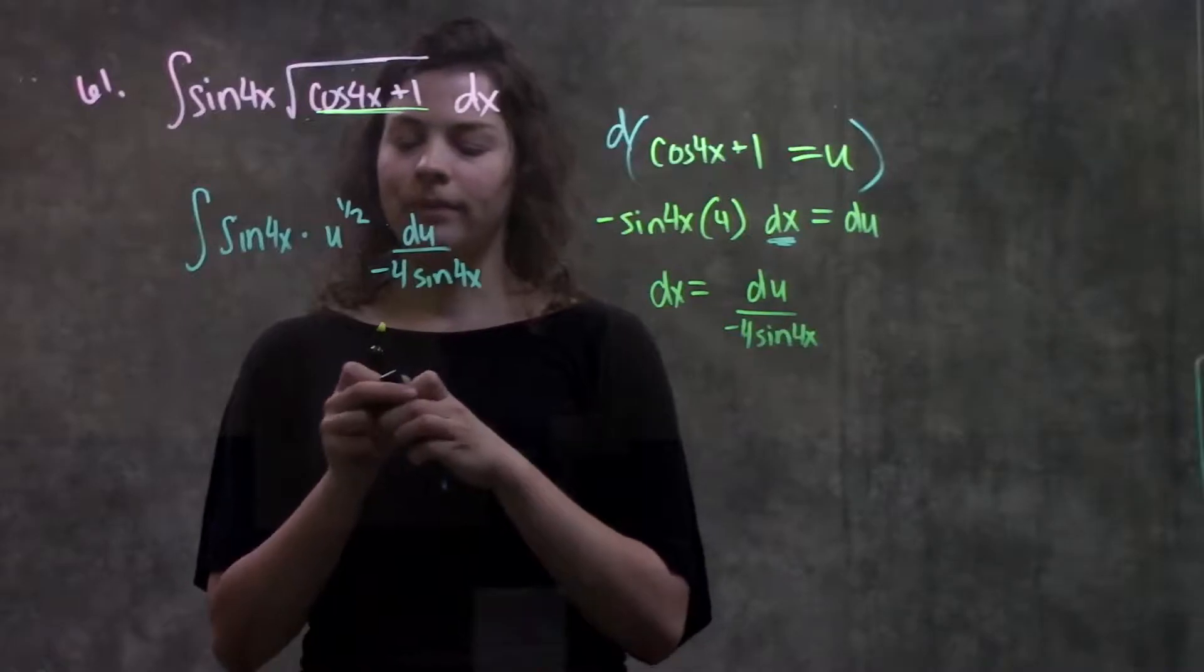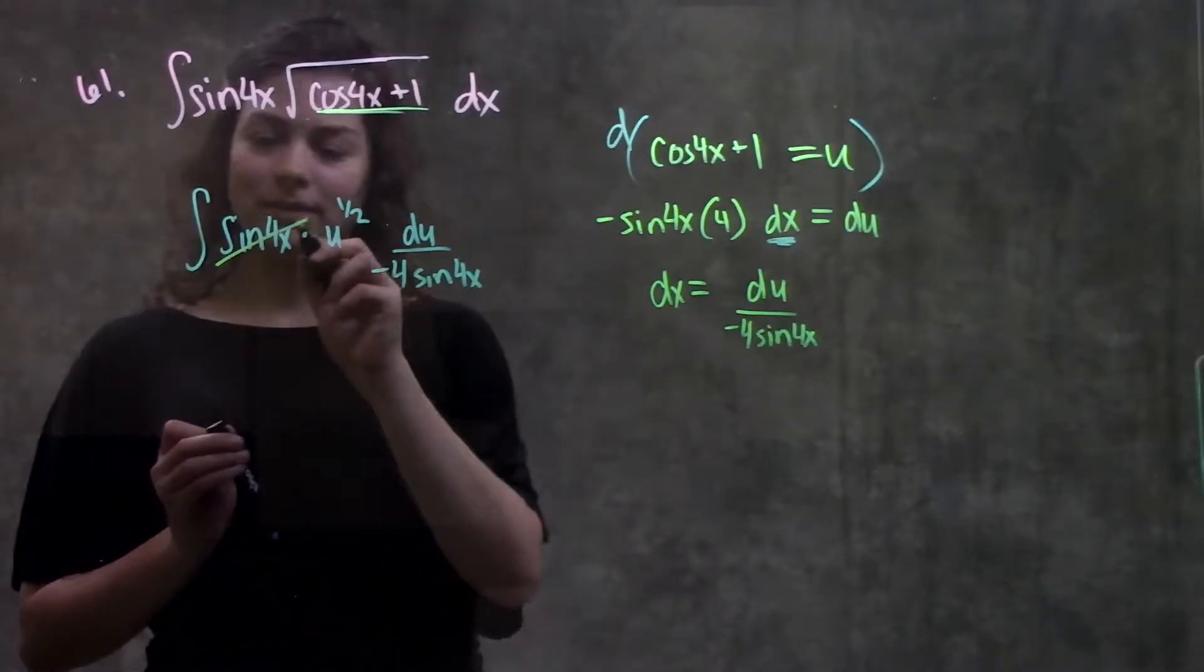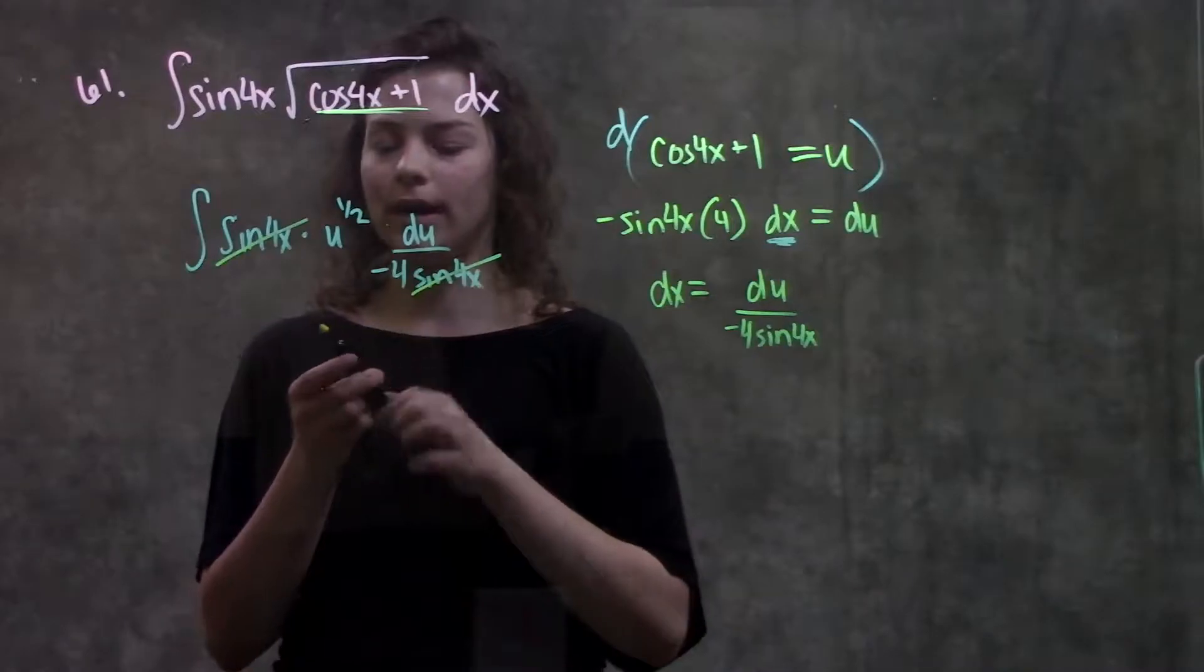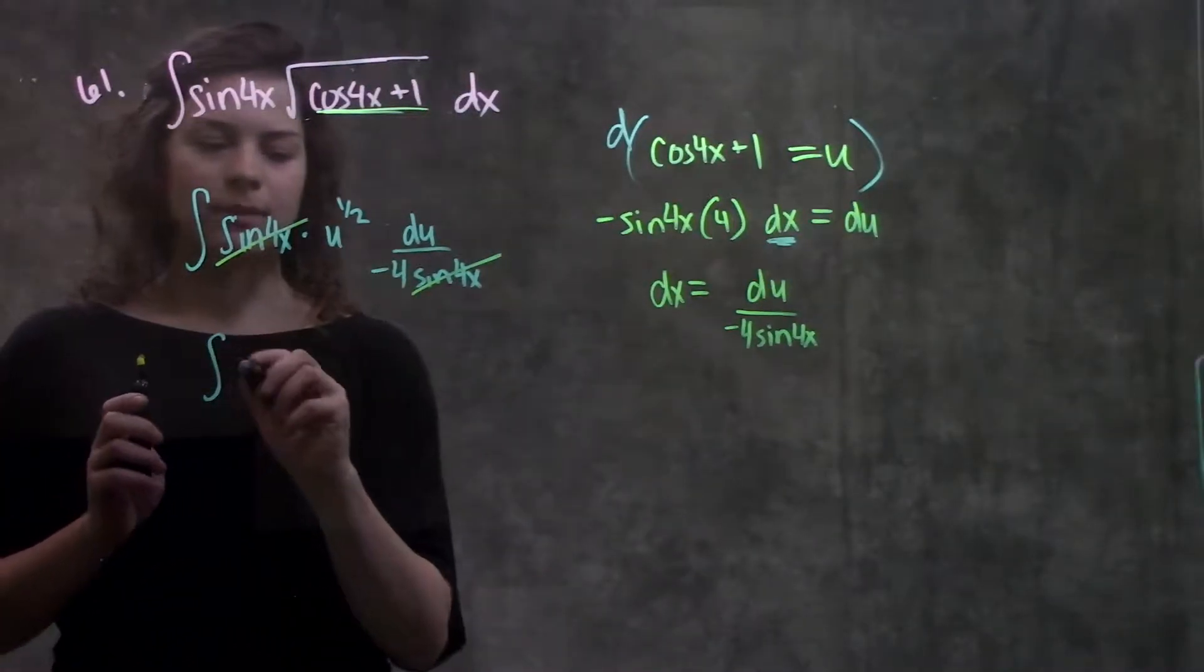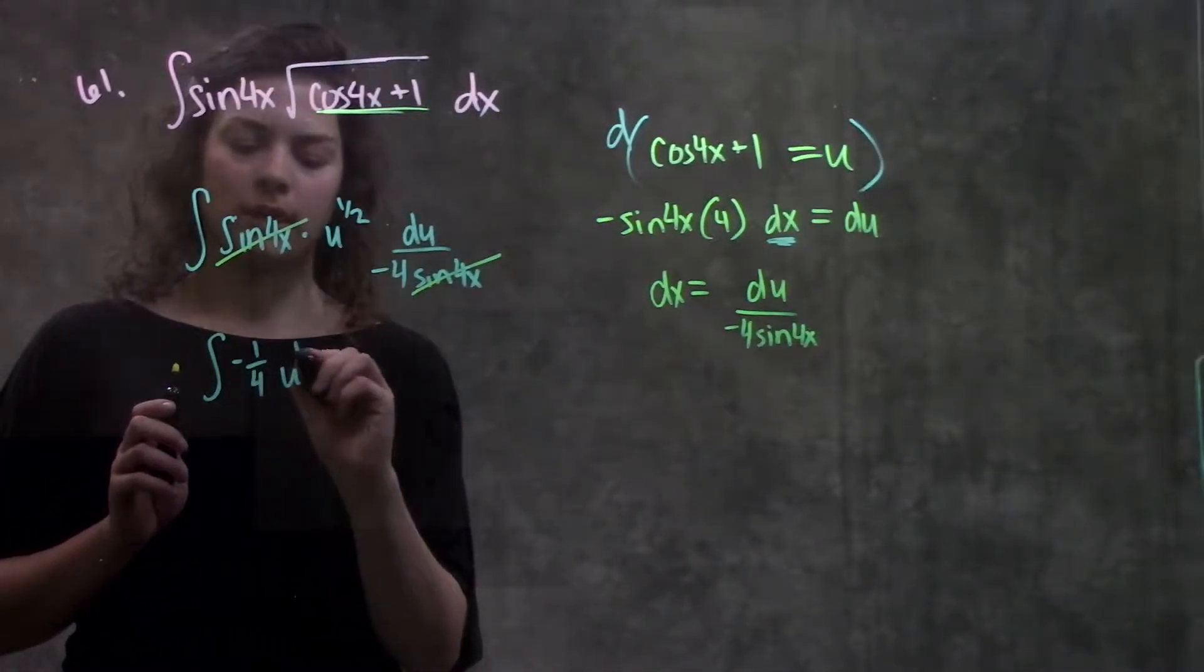But conveniently, this sine 4x cancels with this sine 4x just like I wanted. And now I have something that is written in terms of only u. I have negative 1 fourth u to the 1 half du.